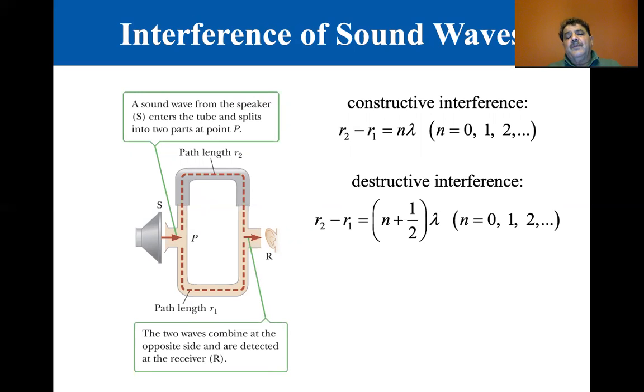Now you would get destructive interference if R2 minus R1 were N plus a half lambda. So at one half lambda, one and one half lambda, two and one half lambda, you've got destructive interference. And what that means is that you would actually cancel and you wouldn't hear anything in your ear.